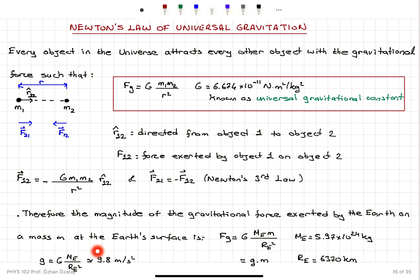This gravitational acceleration of 9.8 m/s² is strictly correct at the Earth's surface. If we are at a height h from the surface, the distance between the center of the Earth and the object changes, becoming (R_E + h)².